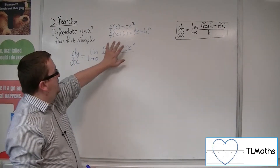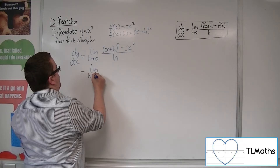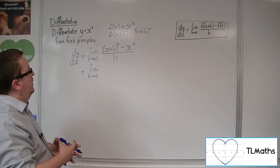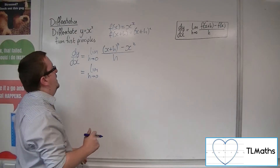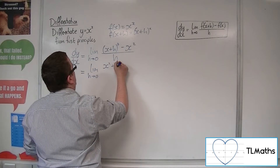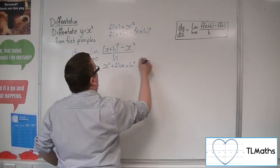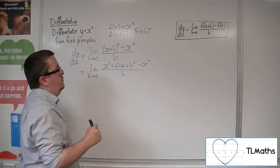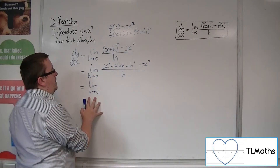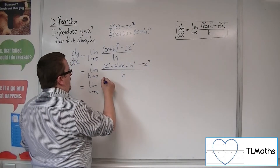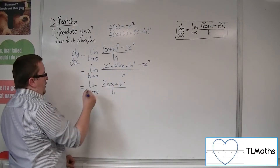What we need to do is simplify this. We've got the limit as h tends to 0 — that limit should maintain through the whole process. Now x plus h squared, we need to expand that bracket, so we get x squared plus 2hx plus h squared. We've still got the take away x squared on the end, and we're dividing through by h. The x squared terms cancel, and we're left with 2hx plus h squared over h.